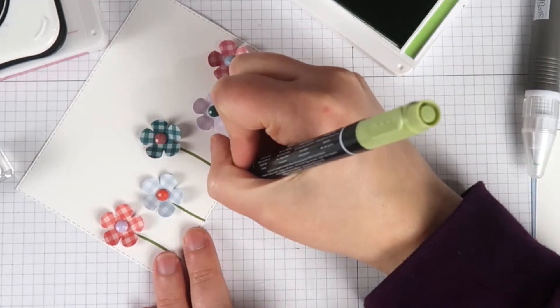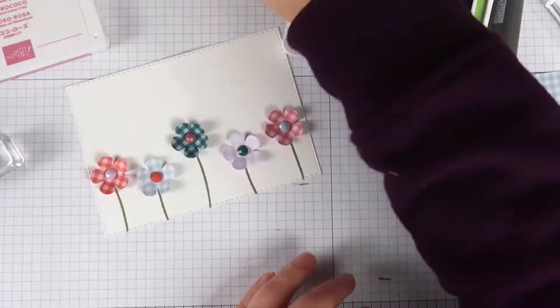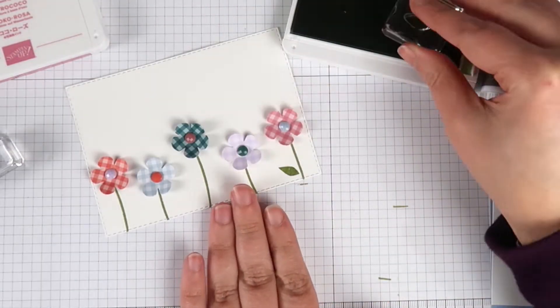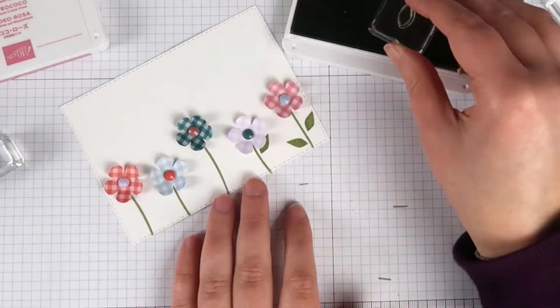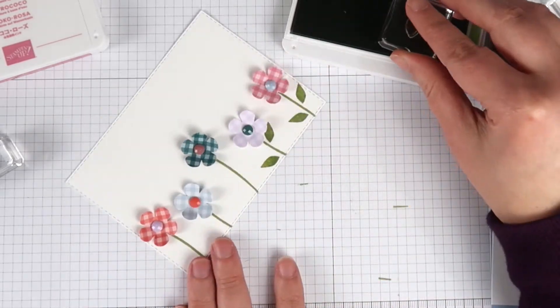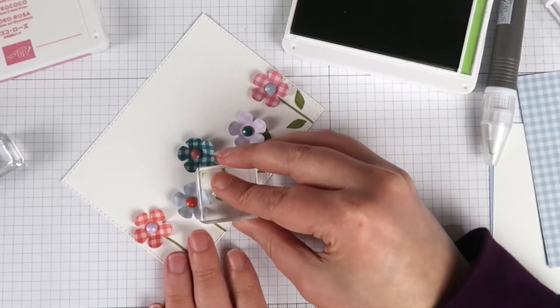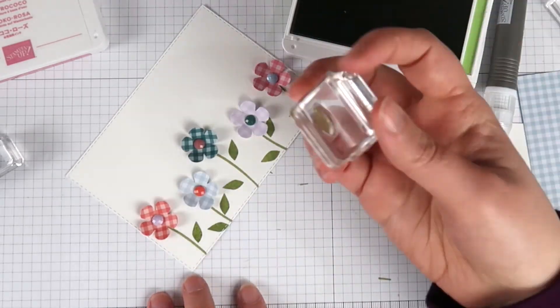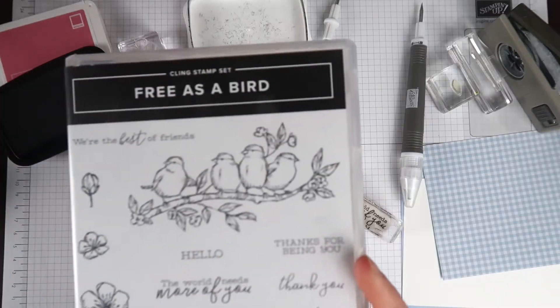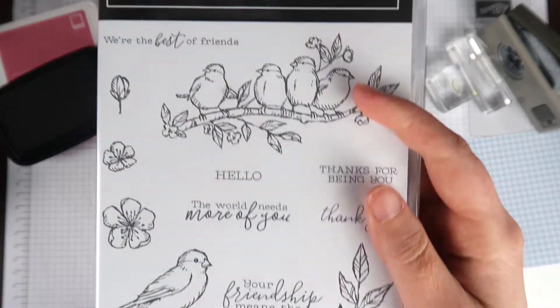Here I have a stem that didn't quite go to the bottom, so I'm just gonna take my Stampin' Write marker and extend that stem just a little bit. You never know while those flowers are still there. Before I glue them down, I'm gonna figure out where I want to put my leaves for these, so I'm just kind of moving those flowers around and stamping them where I think makes the most sense.